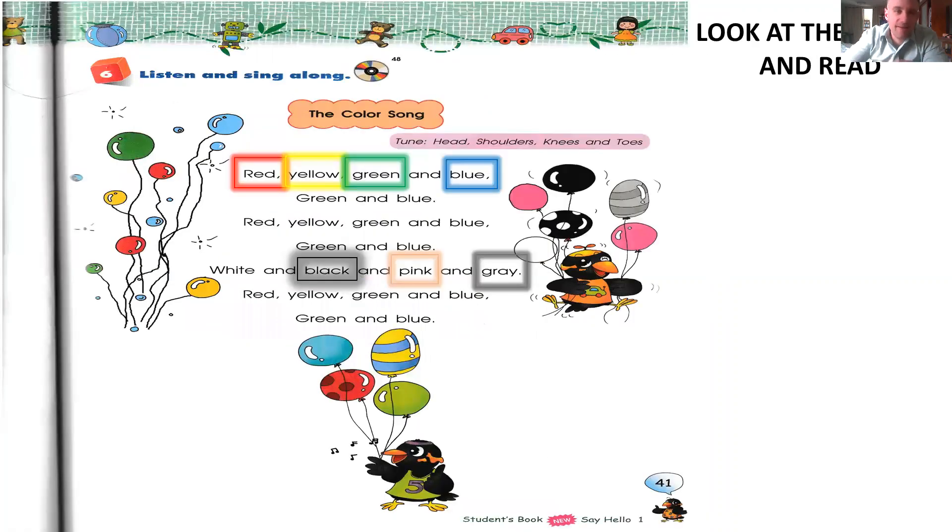Okay, let's continue with the color song. You repeat after me. Red, yellow, green and blue, green and blue. Red, yellow, green and blue, green and blue. White and black and pink and gray. Red, yellow, green and blue, green and blue.